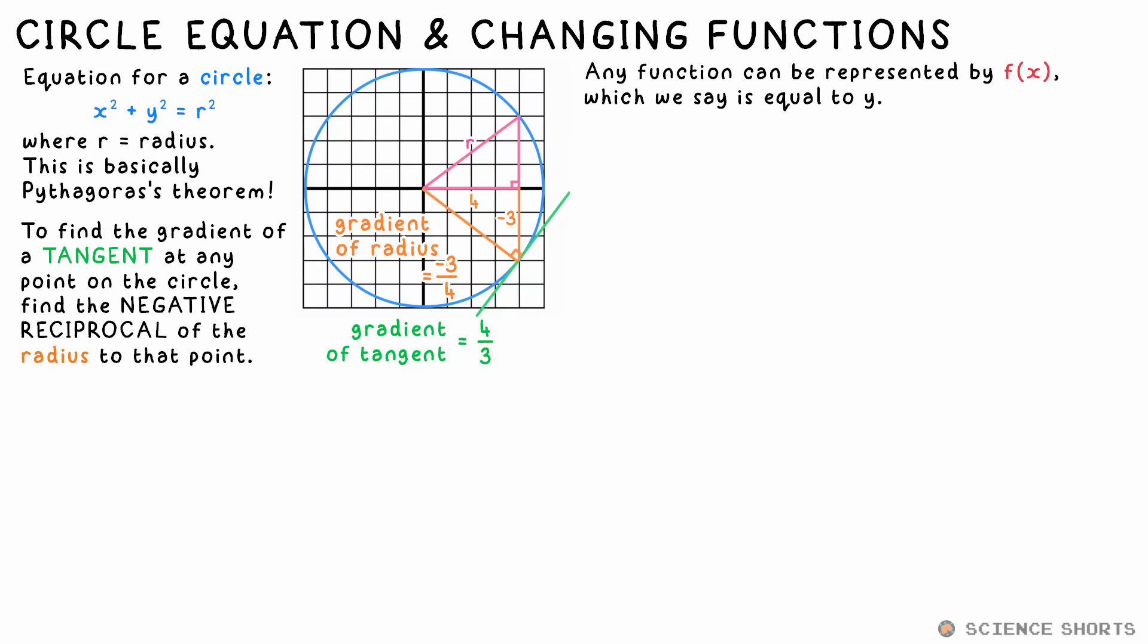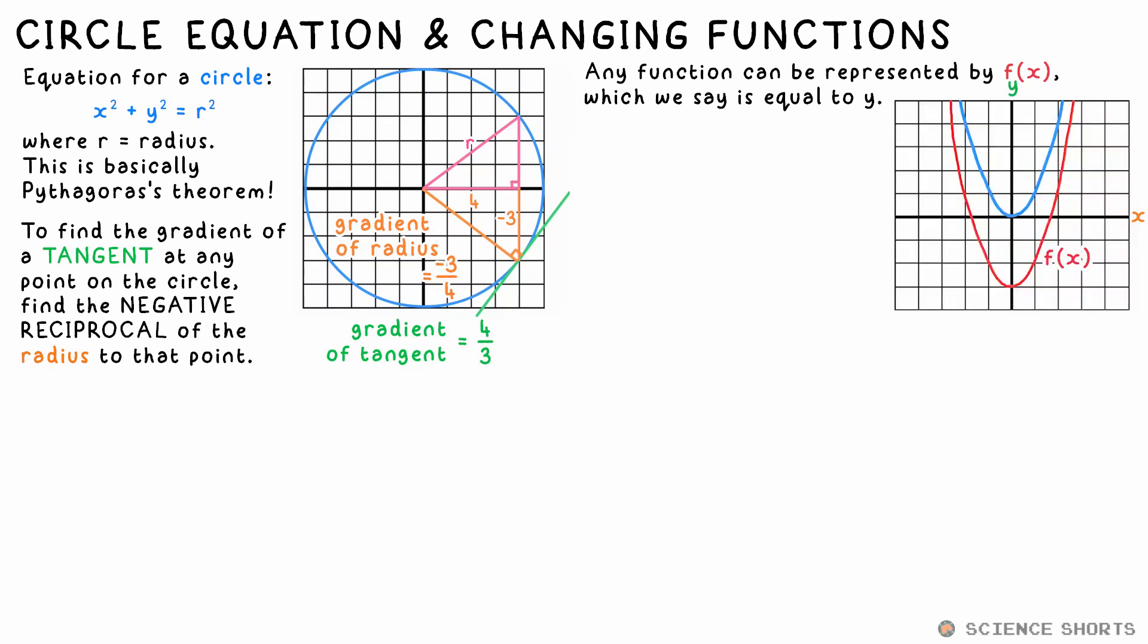This function could be x, x squared, 3 root x, whatever the equation actually is. We're just using this as a shortcut. We're just combining it into this f of x. If we say that a graph drawn is showing the function f of x, again it could be any function,